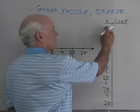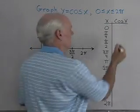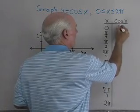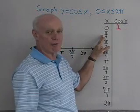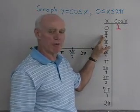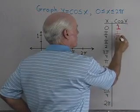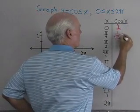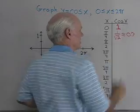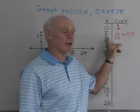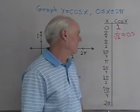When x is equal to zero, cosine of zero is going to be one. When x is pi over four, the cosine of pi over four — or 45 degrees — is going to be one over square root two, which I'll approximate with 0.7 as a decimal. So cosine of pi over four is approximately 0.7.